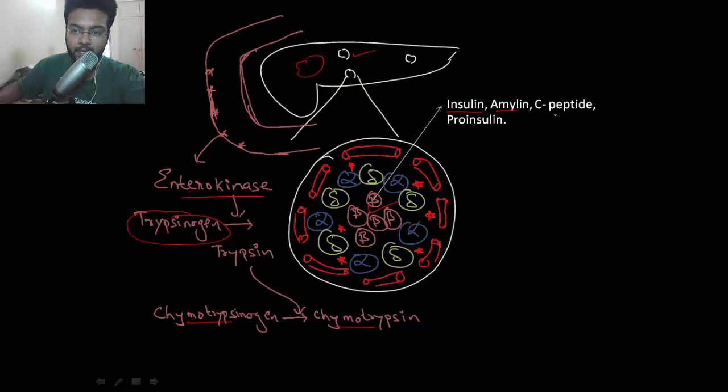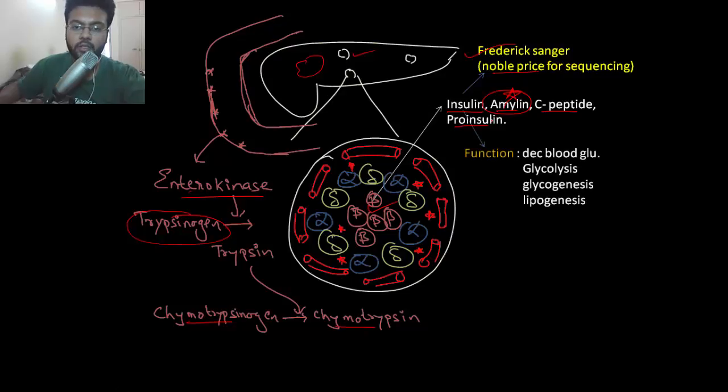Plus amylin, C-peptide and pro-insulin. Amylin is important. Who sequenced the structure of insulin? He was Frederick Sanger. He got Nobel Prize for that.